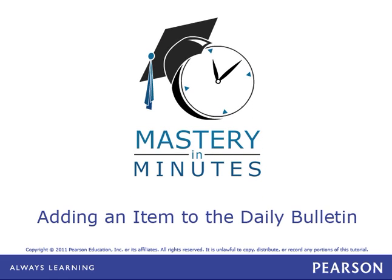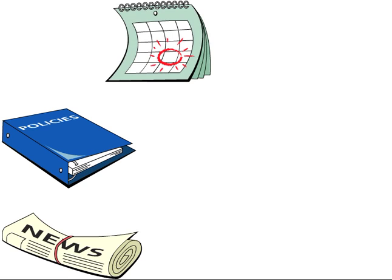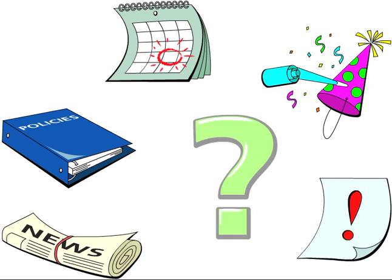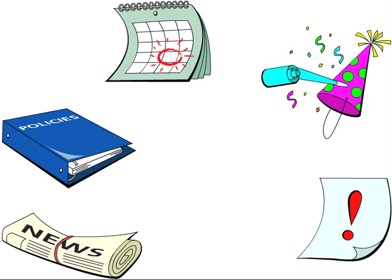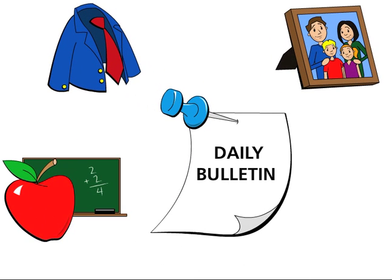Adding an item to the Daily Bulletin. Your school needs to communicate current events, policies, deadlines, celebrations, and notices. But how do you reach your target audience efficiently? The answer is to use PowerSchool's Daily Bulletin to communicate with all of your school's stakeholders.